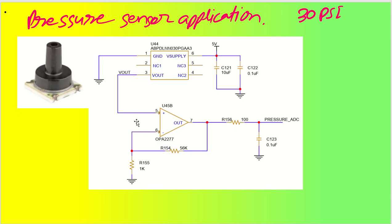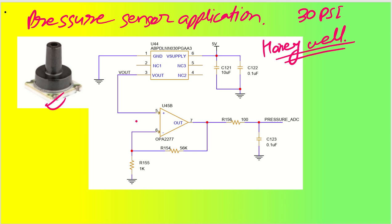A 30 PSI pressure sensor from Honeywell is included. The sensor requires a 5V supply. Its analog output voltage is amplified approximately 57 times by an op-amp stage, then passed through a low-pass filter before going to the pressure sensor ADC input. Exact calculations for pressure range will be covered in a later session.